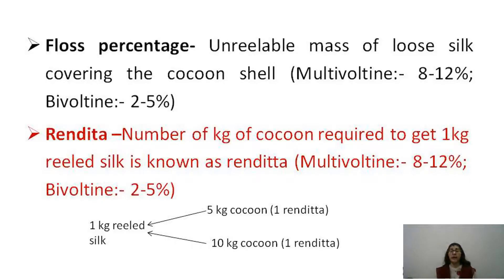Floss percentage refers to the unreliable mass of loose silk covering the cocoon shell. Multivoltine species have more floss than bivoltine. Rendita is the number of kilograms of cocoon required to get 1 kg of reeled silk. Multivoltine species have more rendita, meaning more cocoons are required to produce 1 kg of silk, indicating less silk per cocoon. Bivoltine varieties have less rendita, meaning fewer cocoons are needed, so bivoltines have more silk in each cocoon.